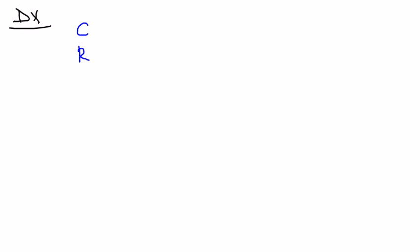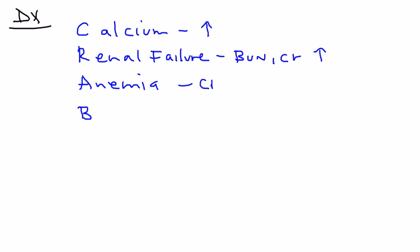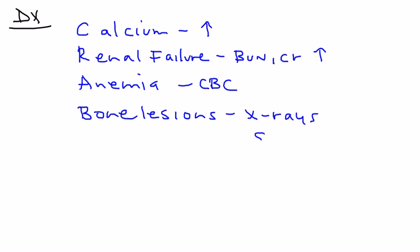Now let's talk about diagnosis. Fortunately, there is a mnemonic to help remember the diagnostic criteria. C is for calcium — there is hypercalcemia, so this will be elevated. R is for renal failure — checked by measuring BUN and creatinine, which will be elevated. A is for anemia — checked with a simple CBC. And B is for bone lesions — seen on x-rays during a skeletal survey.